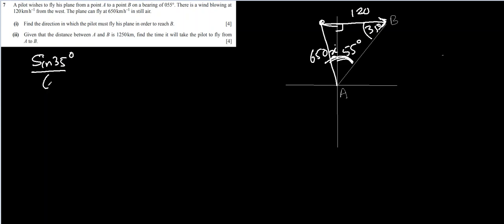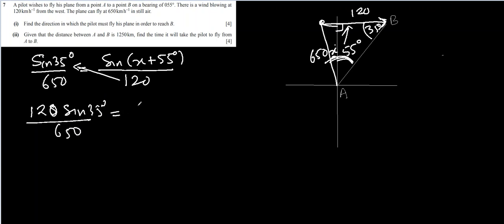It will be sine 35 degrees over 650 equal to sine x plus 55 degrees over 120. 120 is the opposite this one. So let's cross multiply 120 with this. So 120 sine 35 degrees over 650 comes out to be sine x plus 55 degrees.